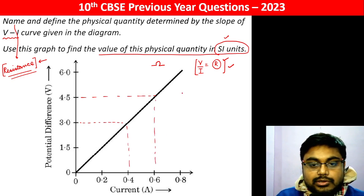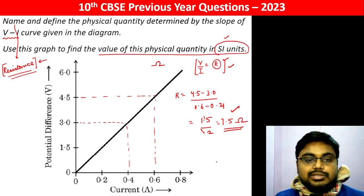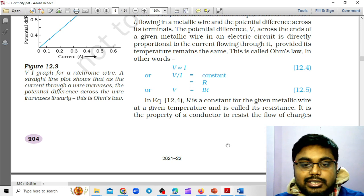So R will be 4.5 minus 3.0 divided by 0.6 minus 0.4, which is 1.5 divided by 0.2, which is 7.5. This is the value in SI units.